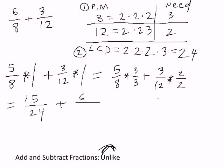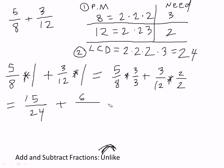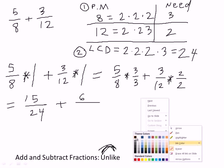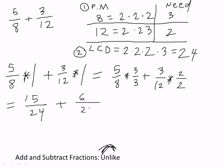Now we can do our multiplication: 5 times 3 is 15, over 8 times 3 which is 24. Plus 3 times 2 is 6, over 12 times 2 which is 24. Now these fractions like each other — both have denominator 24 — so we can simply add: 15 plus 6 over 24 equals 21 over 24.